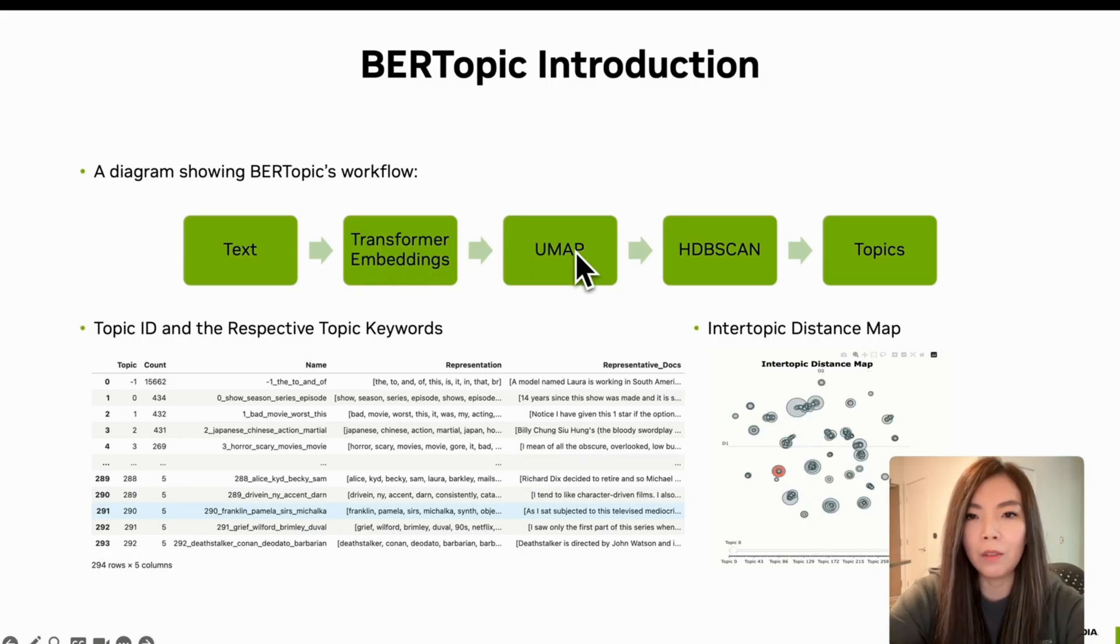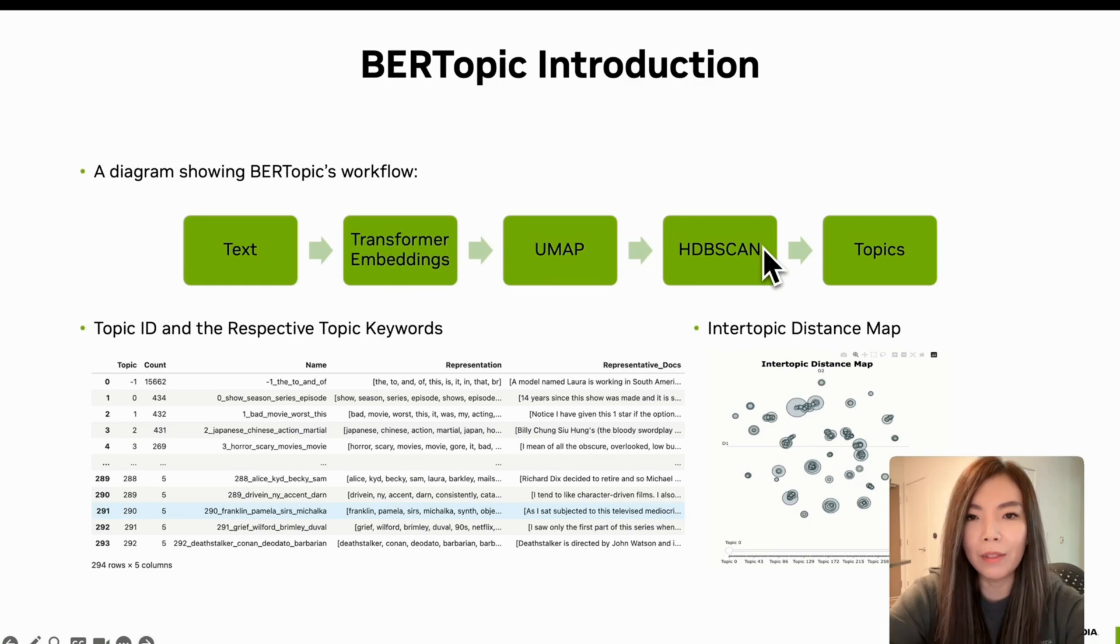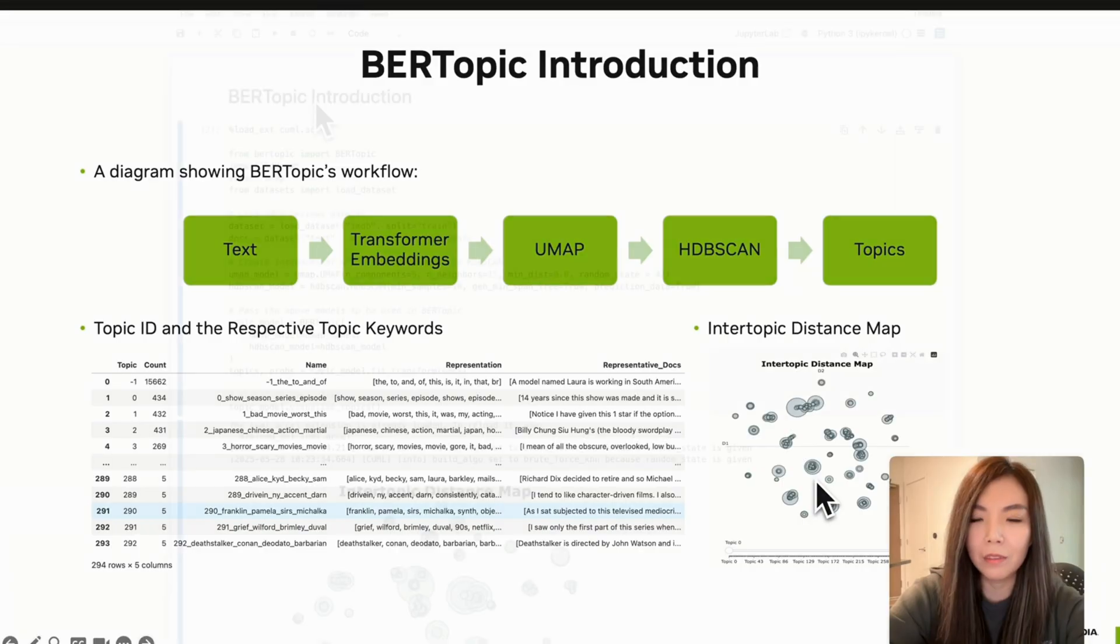It follows the workflow in the diagram. Raw text is converted into dense vector representations using transformers like BERT or RoBERTa. Then two instances are created including UMAP and HDBSCAN. UMAP is used to reduce the high-dimensional embeddings into a lower-dimensional space for better clustering. And HDBSCAN is used to find natural topic clustering without needing a predefined number of clusters.